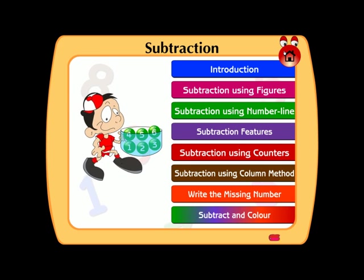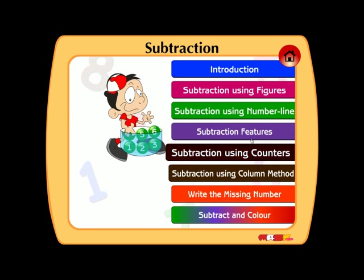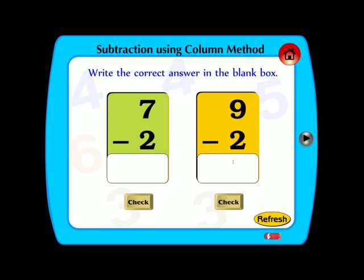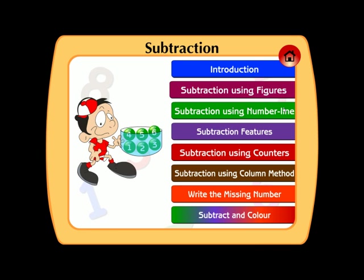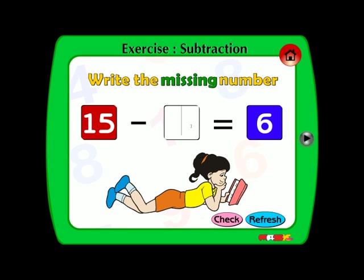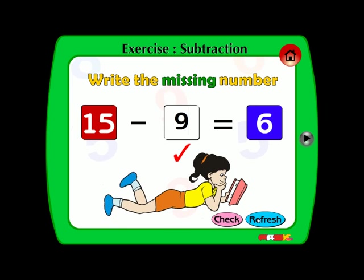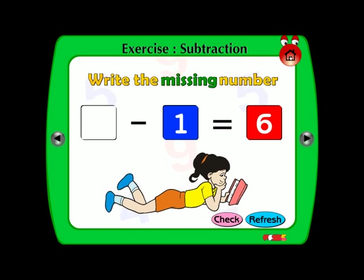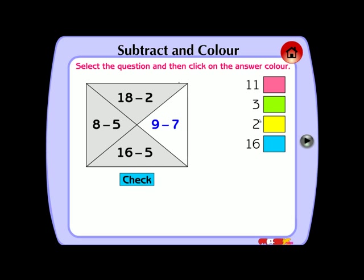8. Write the correct answer. Write the missing number. Select the question and then click on the answer color. Write.